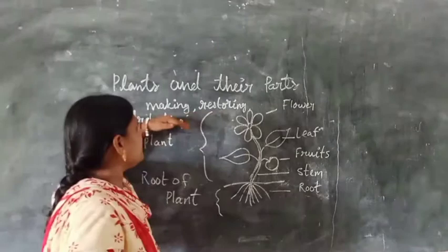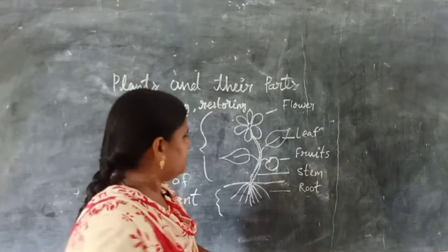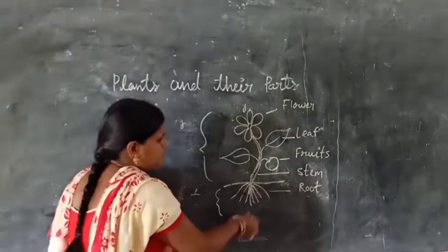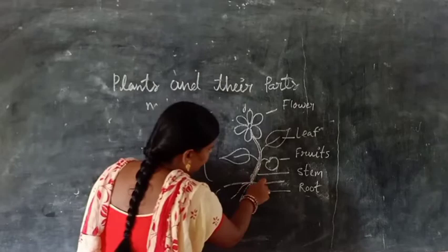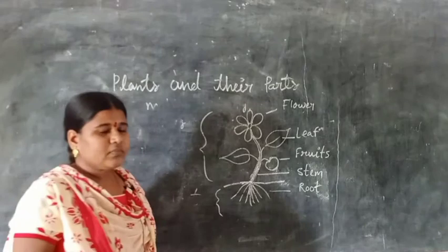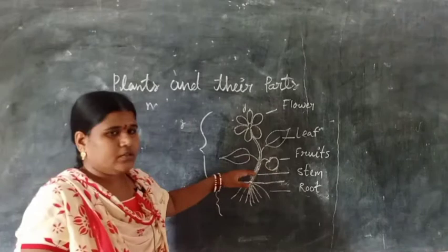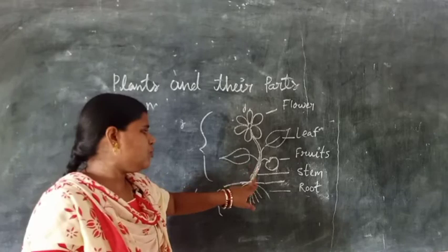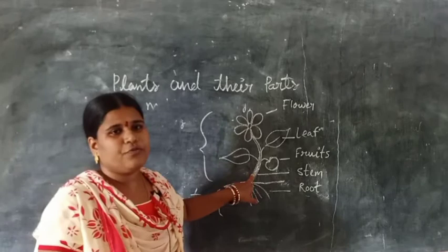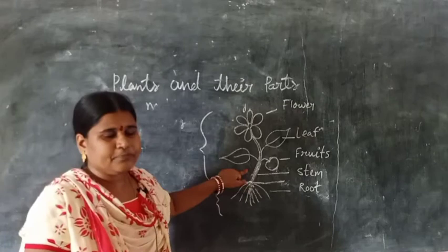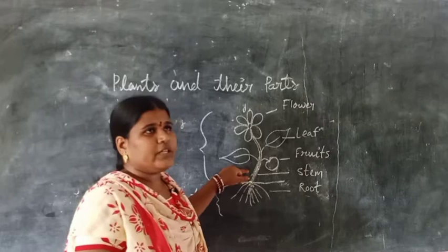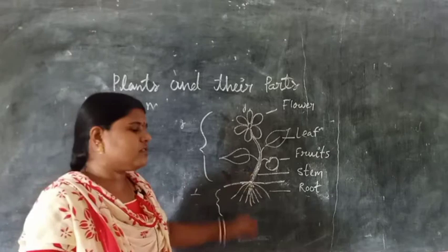Now let us know about the stem. This part is called the stem. The stem holds the soil tightly — it is a very strong and woody part that holds the plant so it cannot move from that place. Some plant stems we eat, such as sugarcane and ginger — those are stems of plants that we eat.